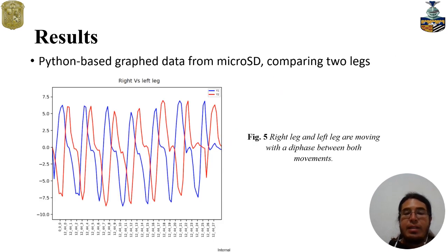And here is a graph comparing the movement of the right leg and the left leg. We can see how both have a difference of phase because the person is walking.